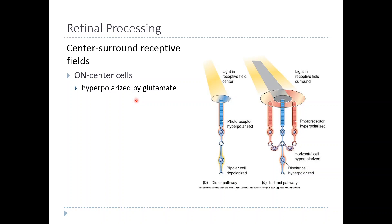The reason is that on-center bipolar cells actually have the opposite of the normal response to glutamate. Glutamate is normally an excitatory neurotransmitter, and these photoreceptors release glutamate. But in the presence of light they release less glutamate, and more in the dark. So the fact that these bipolar cells are depolarized when light is present — meaning there is less glutamate — means they must be inhibited or hyperpolarized by glutamate. They are depolarized by the absence of glutamate, and depolarization causes action potentials. So these cells are excited whenever light hits the center of their receptive field.